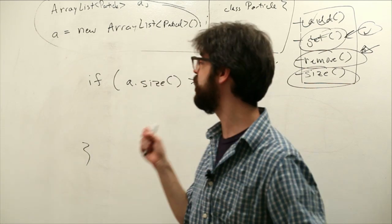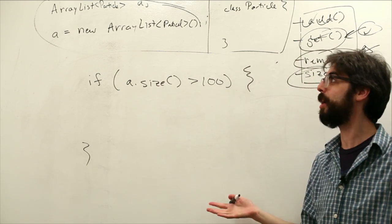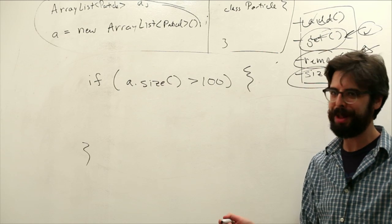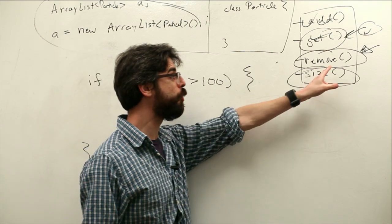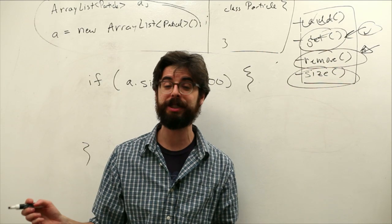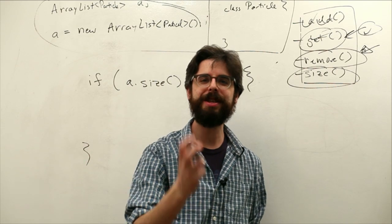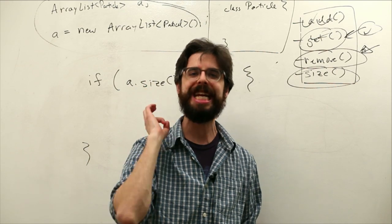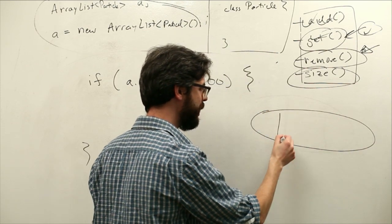We can say something like if a.size is greater than 100, now do something. If the number of elements in that ArrayList has somehow exceeded 100, this will happen very quickly if we are adding a particle every frame. We need to remove an element from that ArrayList.